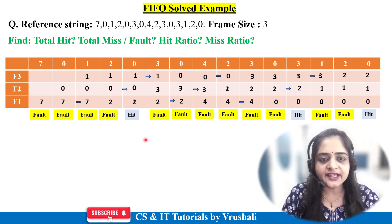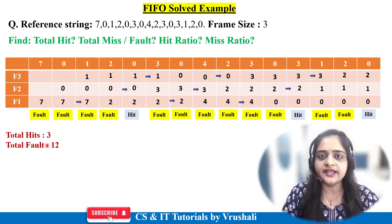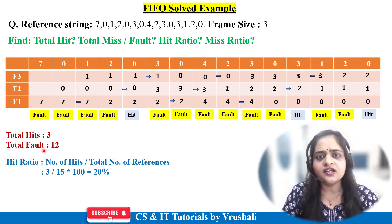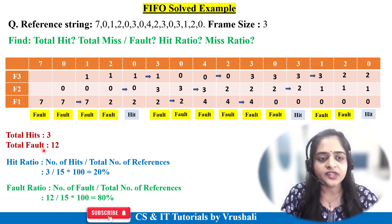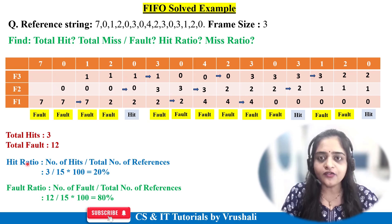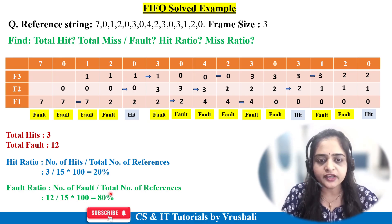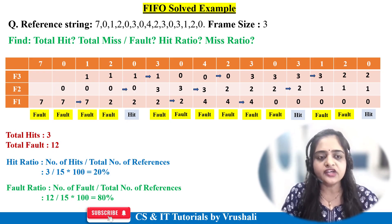Now count the results: total hits = 3, total faults = 12. Hit ratio formula: number of hits divided by total number of references, multiplied by 100. That is 3 divided by 15 into 100 = 20% hit ratio. Fault ratio formula: number of faults divided by total references, into 100. That is 12 divided by 15 into 100 = 80% fault ratio.